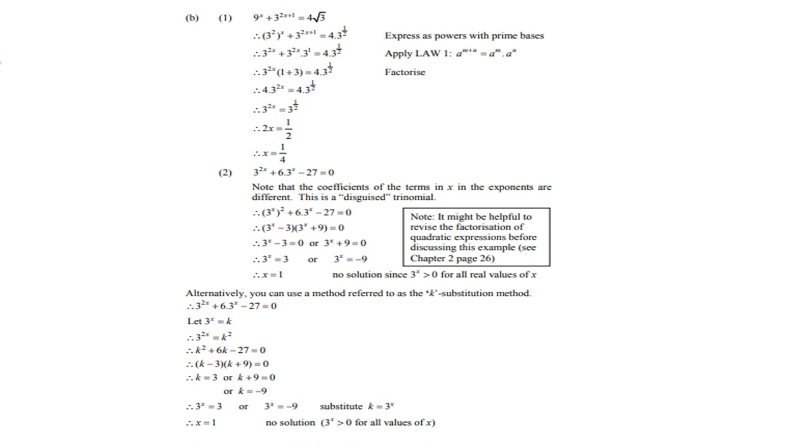You can divide both sides by 4 and then you're left with 3 to the power 2x equals 3 to the power half. So therefore 2x equals a half, divide both sides by 2, and x equals a quarter.